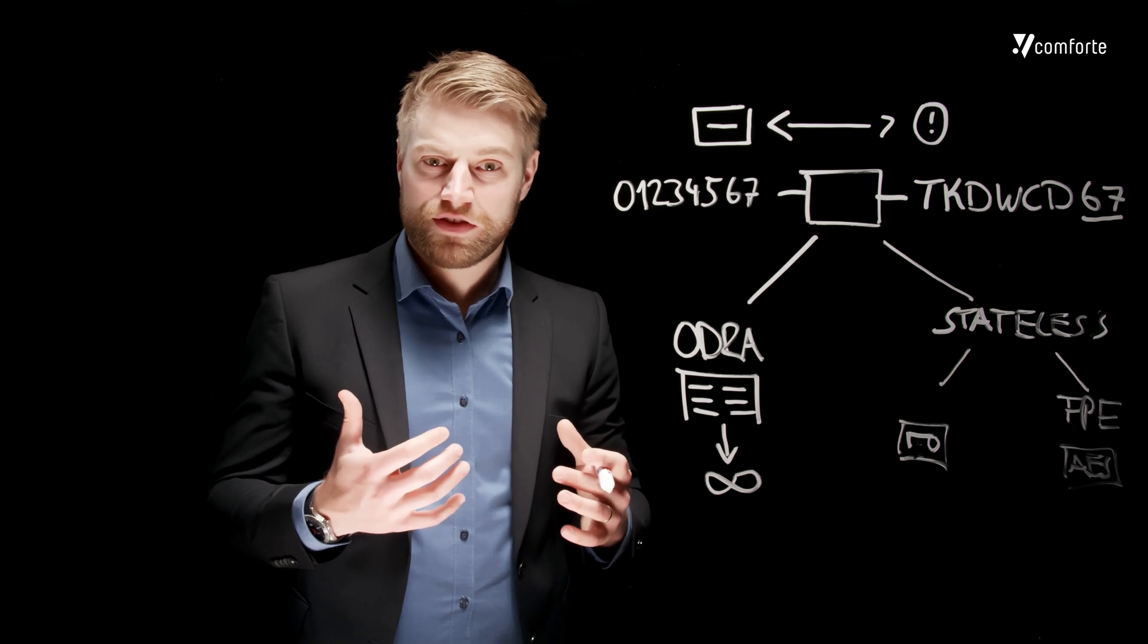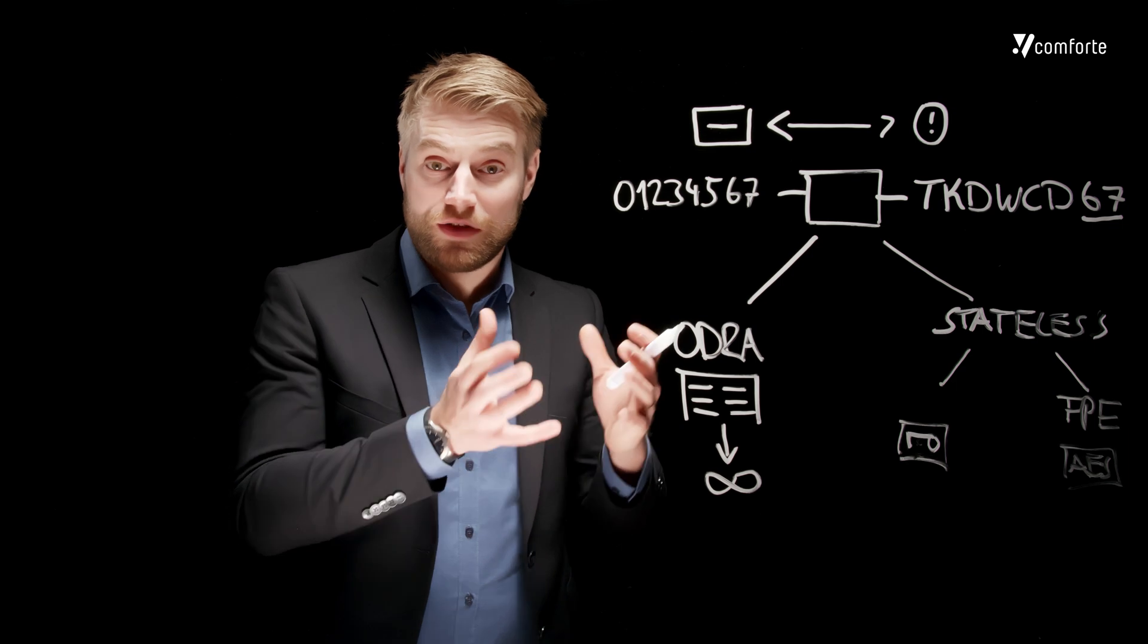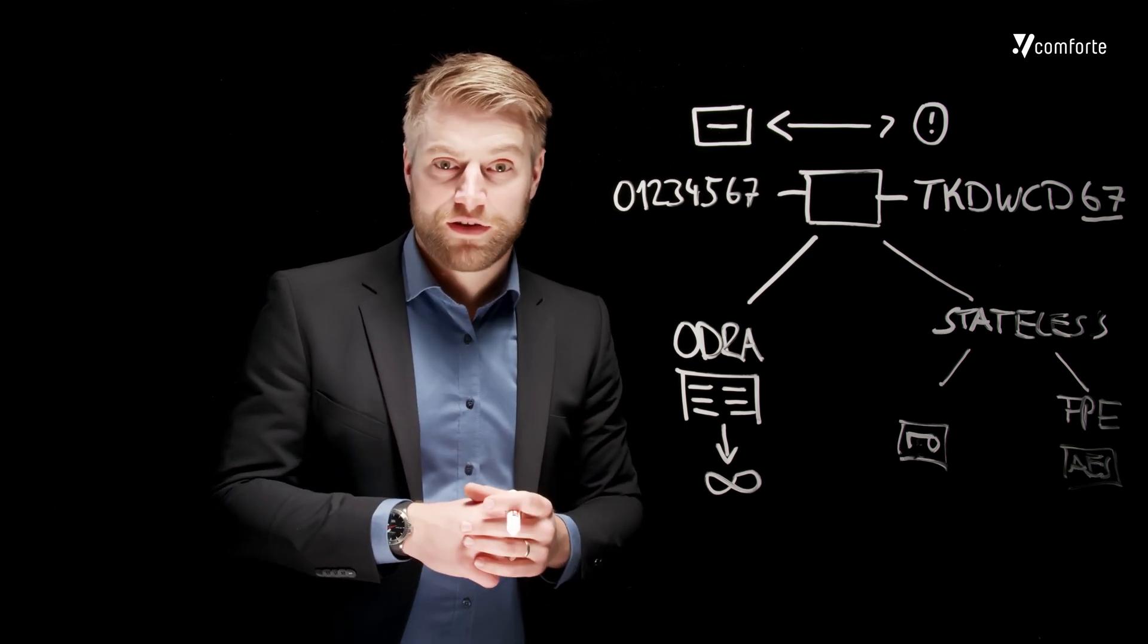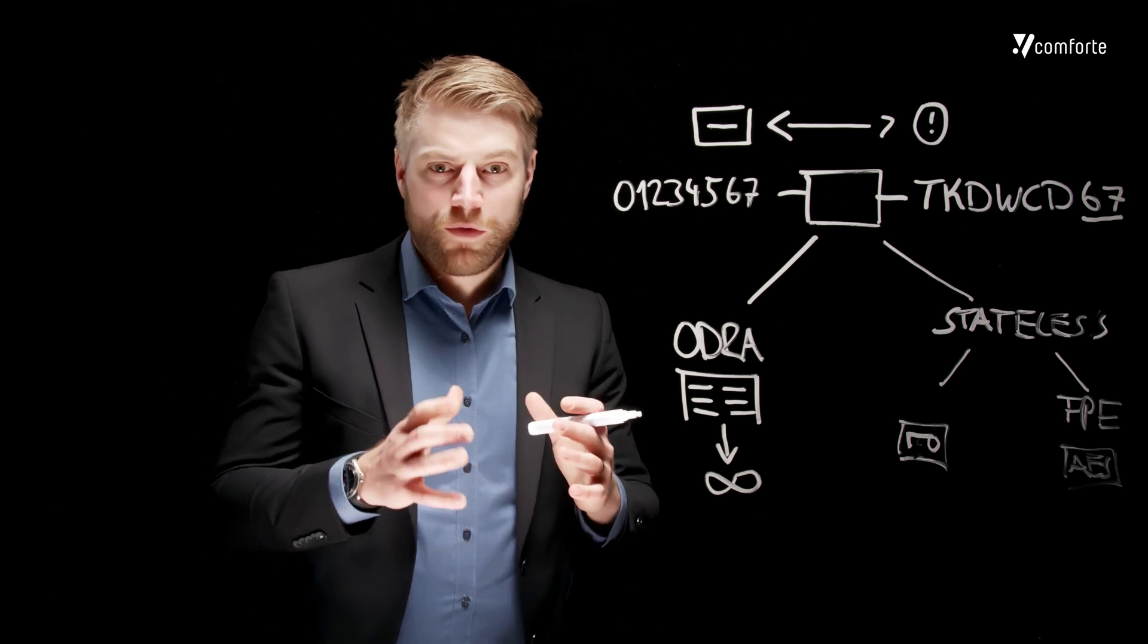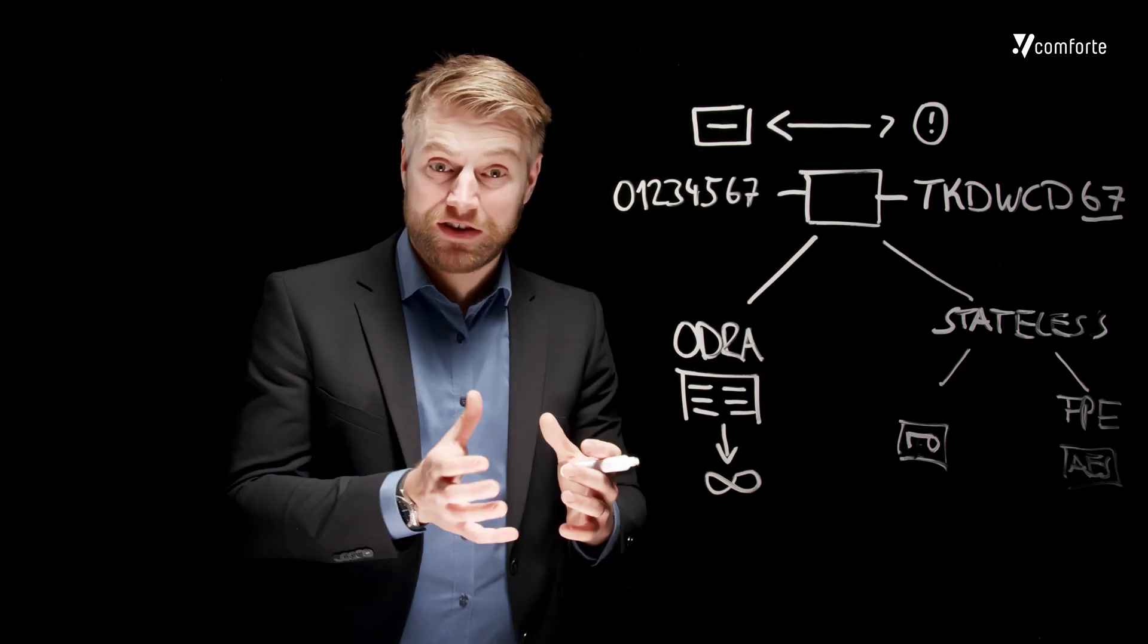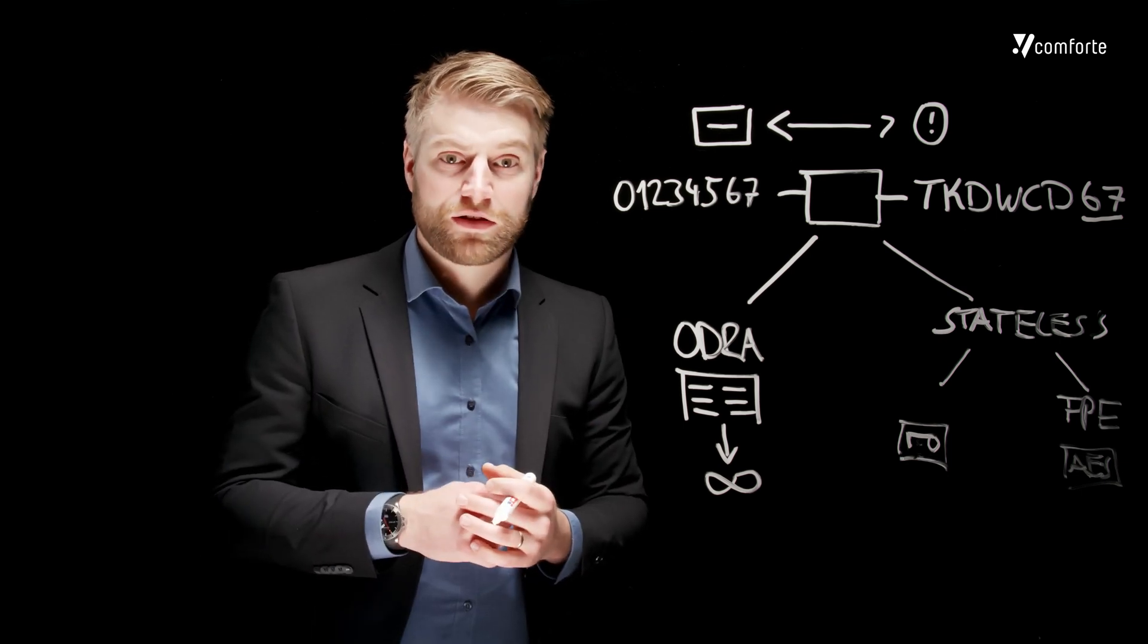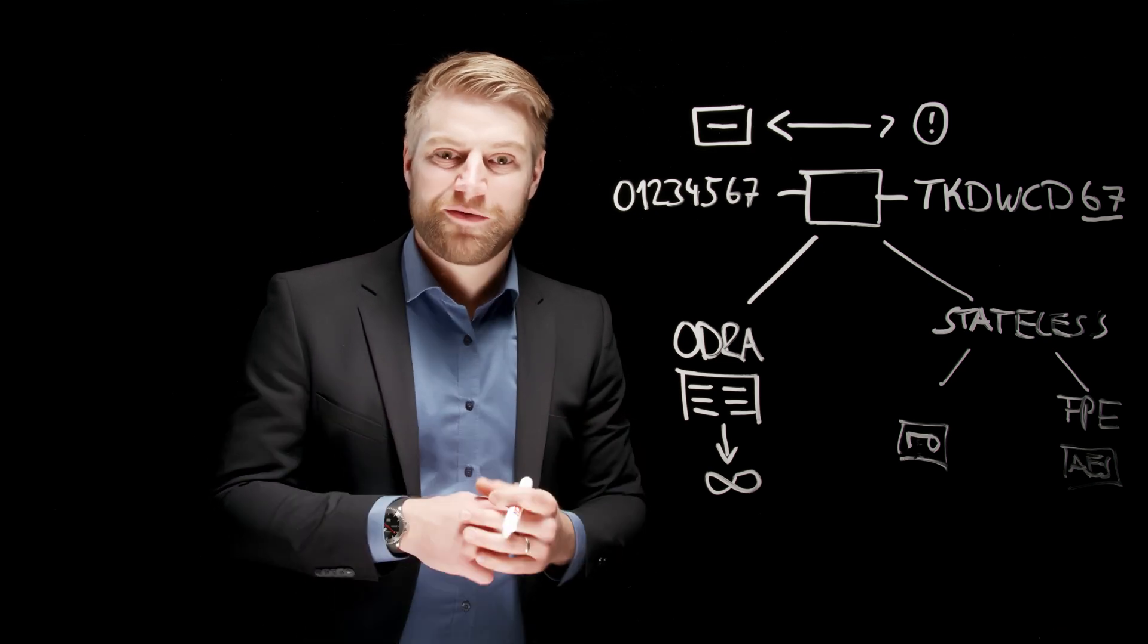So a tokenization system can be implemented in various different ways. And the flexibility, scalability and also the security of such a system really depends on which method you are using. It's also important to think about secret isolation. But that's a topic that we will cover in another video. For now we just can say that tokenization is a really good method when it comes to protecting structured sensitive information and reducing the exposure of sensitive information in your network. It's also a very powerful method when it comes to data-centric security. So thank you for watching and see you in the next video.